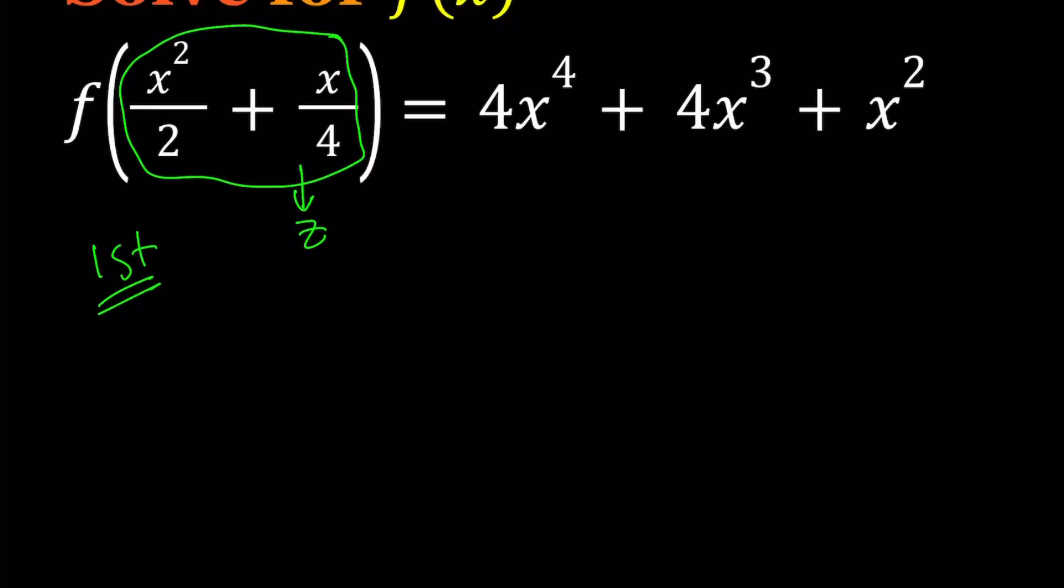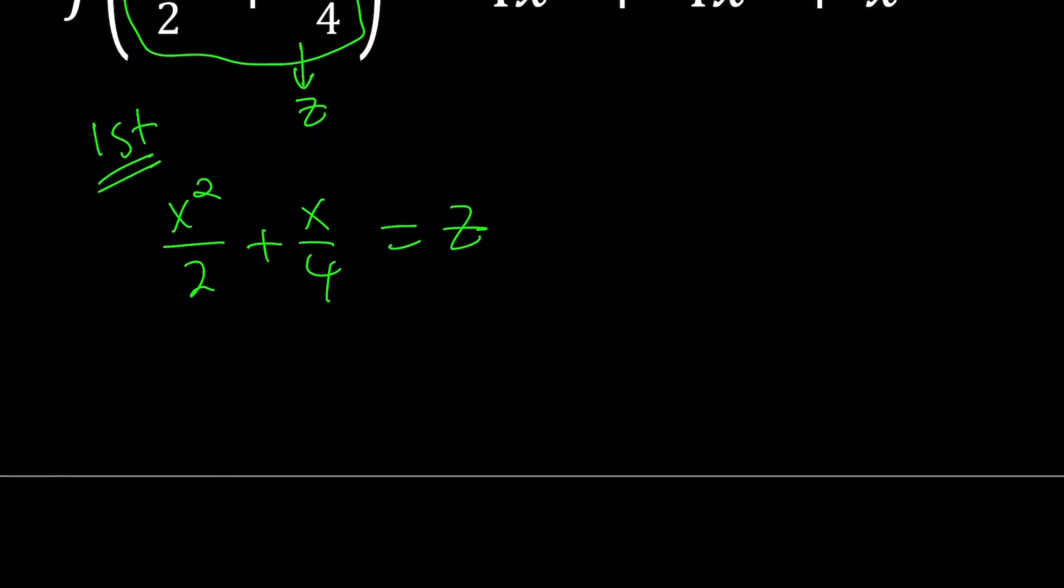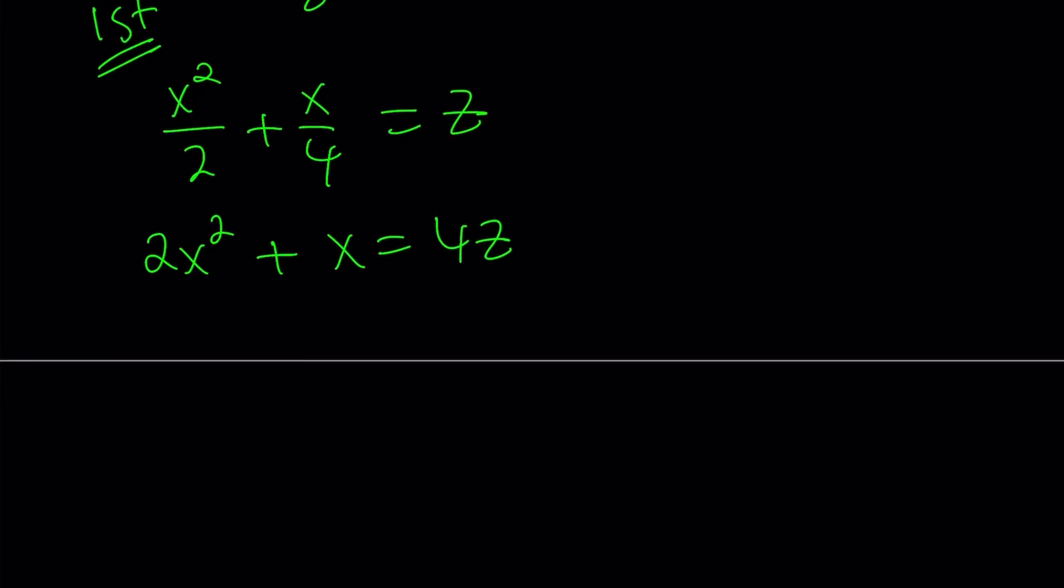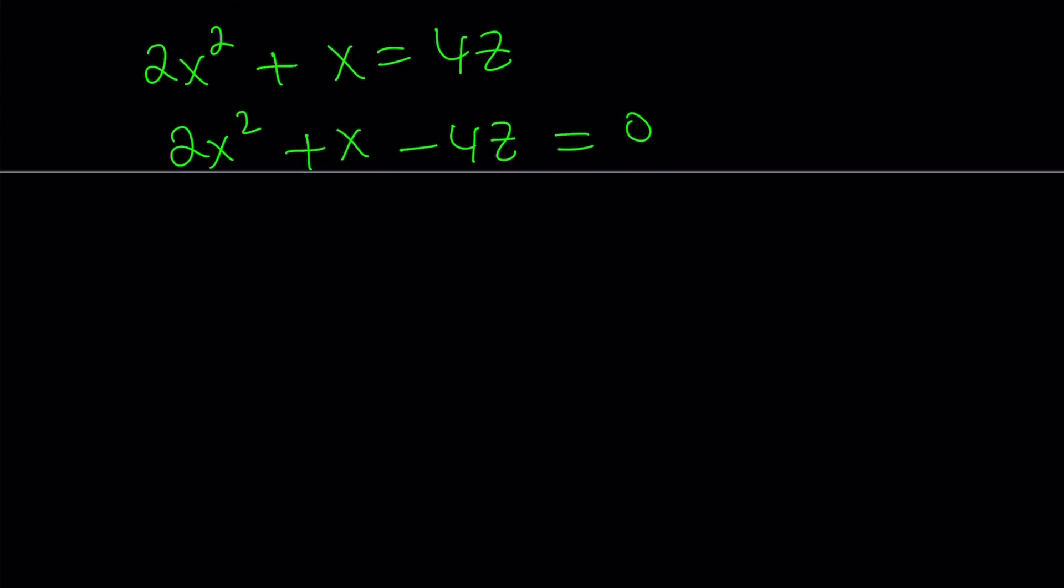Let's find out what x is in terms of z. So x squared over 2 plus x over 4 equals z, based on my assumption. I'm going to multiply everything by 4. That gives me 2x squared plus x equals 4z. 2x squared plus x minus 4z equals 0. We're going to treat the z as a constant and solve this as a quadratic in x. The quadratic formula tells us that x equals negative 1 plus or minus the square root of 1 plus 32z all over 4.